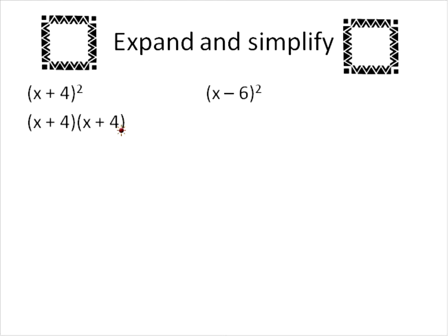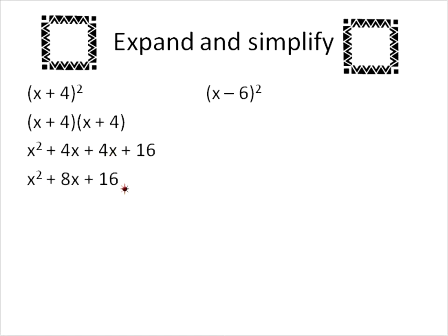And when we do this, you can either use the FOIL method, which is a popular method, or you can take the first term times the first term, the first term then times the last term, and then take the second term and do the same thing. When we do that, we'll take the first term times the first term, and that'll give us x squared. Then we'll take this x times 4 to give us 4x. Then we'll go to our second term and multiply that times the first to get 4x, and multiply that second term times this second term to get 16. And the final step, we'll just join together like terms. We have 4x and 4x. We add those together, we'll get 8x. And that will be our final expanded simplified solution for x plus 4 squared.